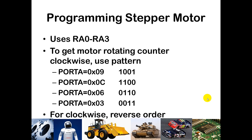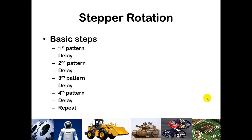If you want counter-clockwise motion, you simply reverse the pattern. This matters for applications like a printer where you want the printhead to go left to right or right to left. The basic steps are: output the first pattern, delay to give time for the motor to move into position, then output the next pattern, delay, and keep doing that. If you repeat that over and over again, you will see fairly smooth circular motion.